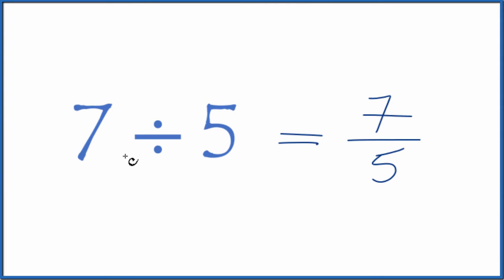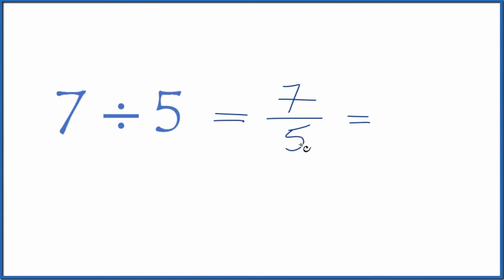You could, on a calculator, 7 divided by 5, or 7 divided by 5 here in our fraction, that equals 1.4. So when you divide 7 by 5, you can get a fraction, 7 fifths, or the number 1.4.